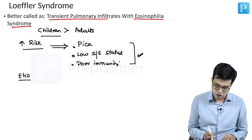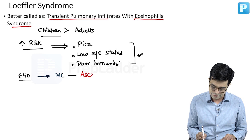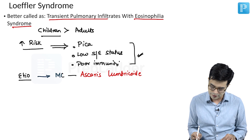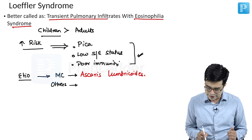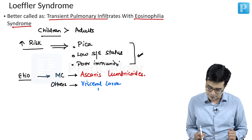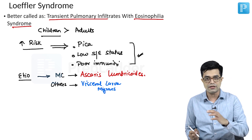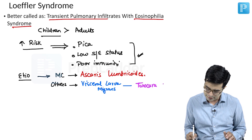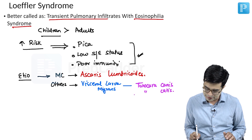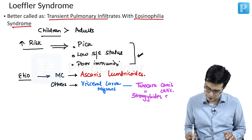The most common etiological agent overall is Ascaris lumbricoides. It can also occur due to other nematodes or parasites which pass through the lung as part of their life cycle — it can be part of visceral larva migrans. Visceral larva migrans produced by Toxocara canis is another important cause. Then we have Toxocara cati. Sometimes it can be produced by Strongyloides stercoralis as well.